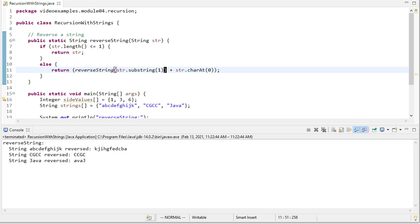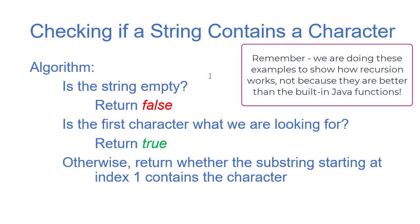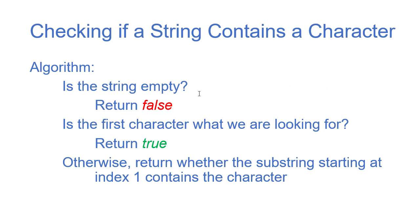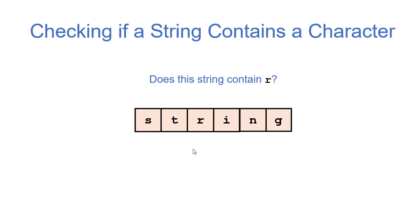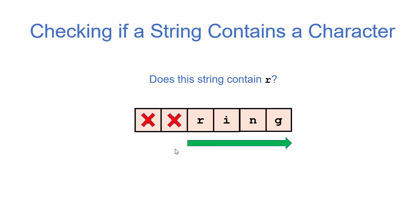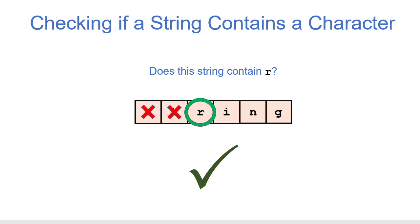For our next recursive string method, we'll check if a string contains a character. The algorithm has two base cases: if the string is empty, return false; if the first character is what we're looking for, return true. The recursive case: if the string isn't empty and the first character isn't what we're looking for, we look for the character in the substring starting at index one.